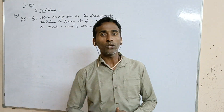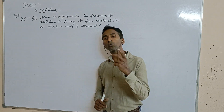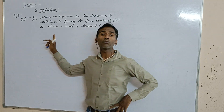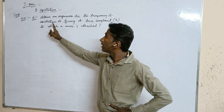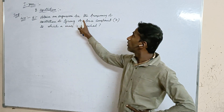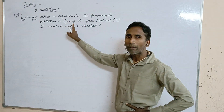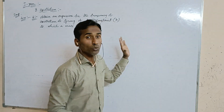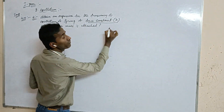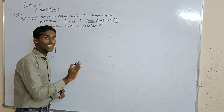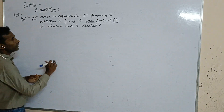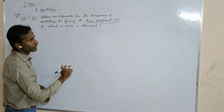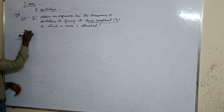Now I am going to cover the chapter on oscillations. This chapter has two most important questions. The first question is: obtain an expression for the frequency of oscillation of a spring with force constant k — that is, the force constant of a spring — to which a mass is attached.